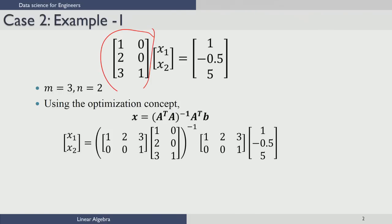If you notice these equations, you would realize that the first two equations are inconsistent. For example, if you were to take the first equation as true, then x1 equals 1, and if you substitute that into the second equation, you will get 2 equal to minus 0.05. If you were to take the second equation as true, then x1 would be minus 0.25, and that would not solve the first equation. So these two equations are inconsistent.